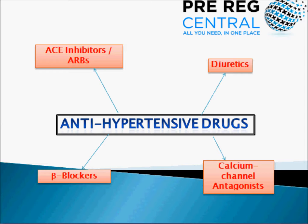Common side effects that you need to be aware of are a consistent dry cough, which is due to bradykinin accumulation, and if this occurs patients can be prescribed the angiotensin receptor blockers. Also when starting an ACE inhibitor the first dose may cause profound hypotension, and so patients should be advised to take the first dose at night whilst sitting down.